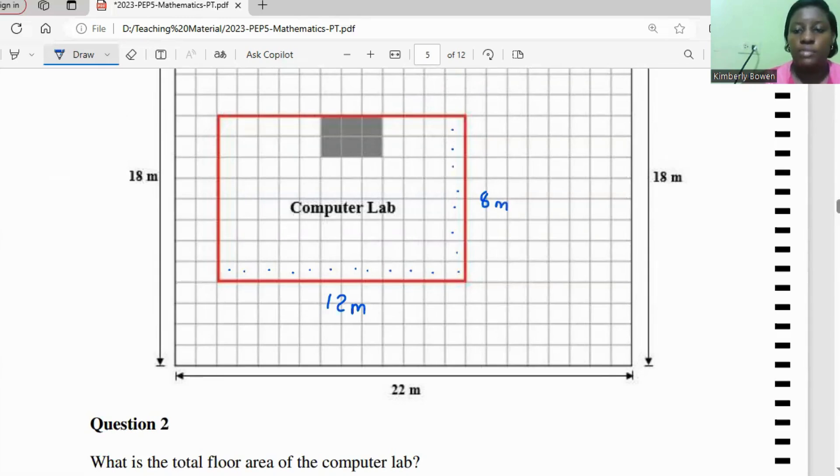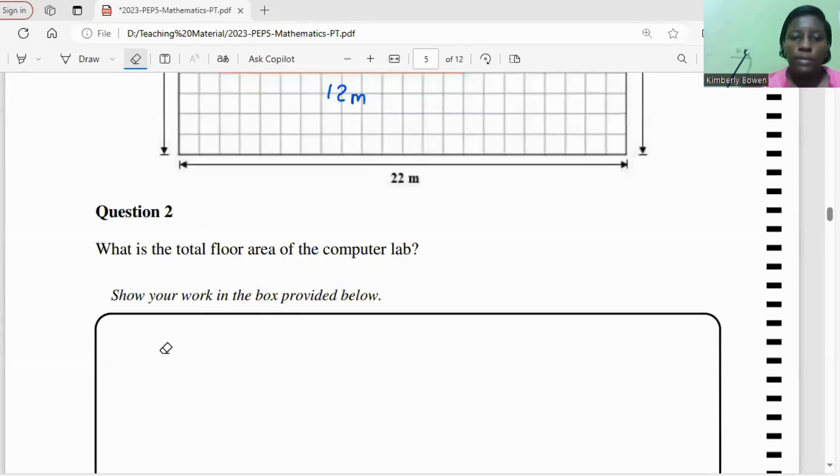So we can say 12 times 8. Question two says what is the total floor area of the computer lab? It says show your working in the box provided below. So we know that the formula for area is length times width. And the length is 8 and the width is 12. 8 times 12 is 96. So it's 96 meters squared. That's the answer for number two.